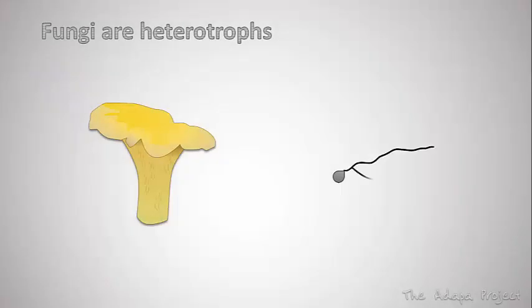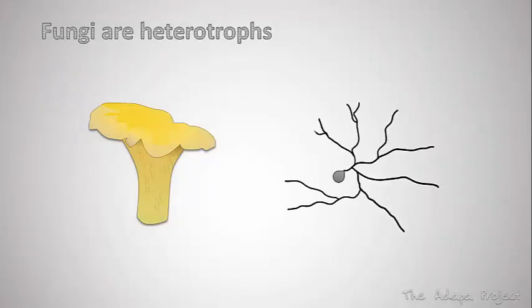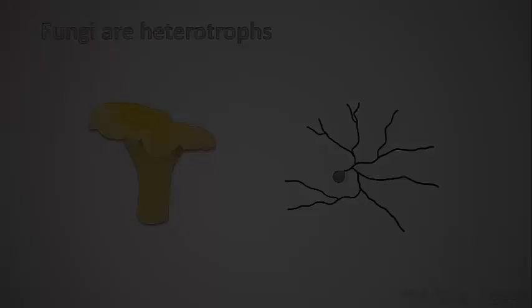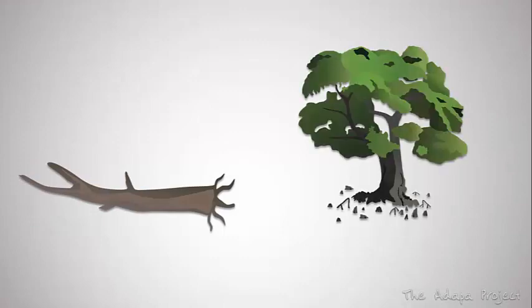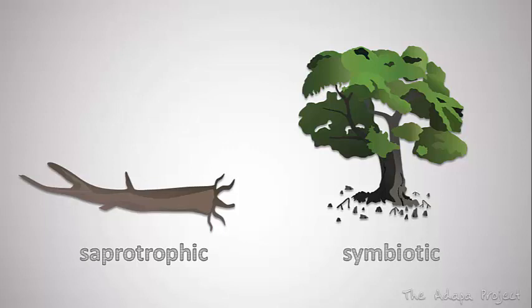Fungi are heterotrophs, which means they need to search for food just as we do. They have different ways to obtain food, though. Fungi either obtain nutrients from dead material or from living organisms. If they feed on dead material, they are called saprotrophic, saprophytic or saprobe fungi. If their nutrients come from living organisms, they are called symbiotic fungi.